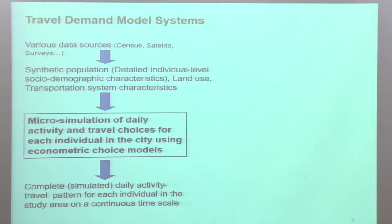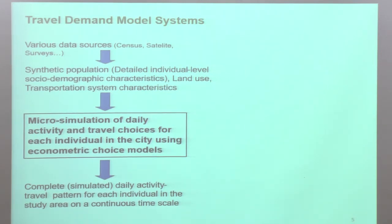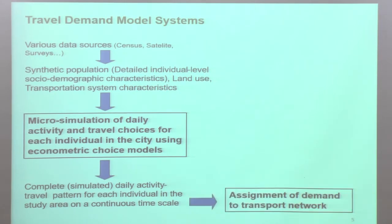Typically, travel demand model systems are models that try to micro-simulate daily activity and travel patterns of an individual — essentially the whole day of an individual. Likewise, the whole day of all individuals in the city, to simulate their travel patterns that are put together and assigned to the transport network.